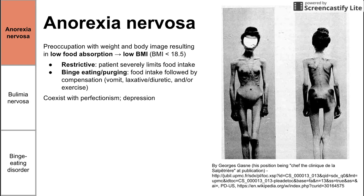Anorexia often coexists with perfectionism. A lot of times these patients are students who get amazing grades and are really good gymnasts or athletic people who always maintain a low body weight and are very fit. Anorexia can also coexist with depression.